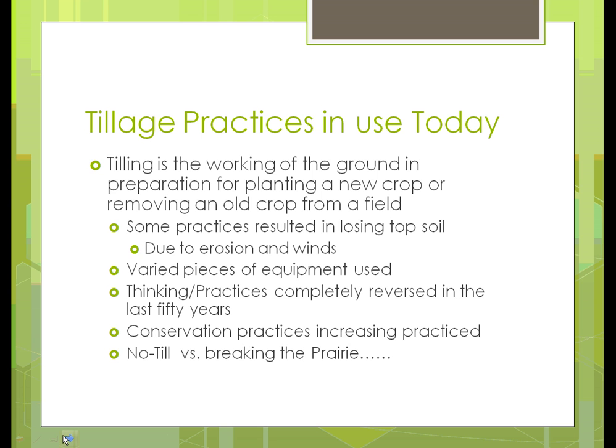The first area we'll talk about is the tillage practices in use today. When they had native prairies, they called it busting the prairie — using equipment to dig into the land every year. We found out that these practices were causing a lot of soil loss due to erosion from winds in the winter, because the land was left open. One of the reasons they changed was because of the Dust Bowl — they found that plowing and leaving fields open made them prone to erosion, with wind blowing soil everywhere.